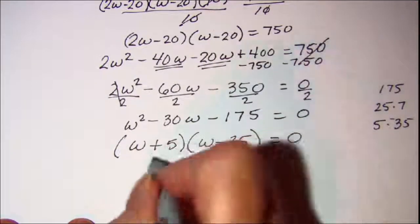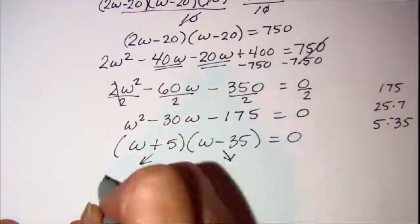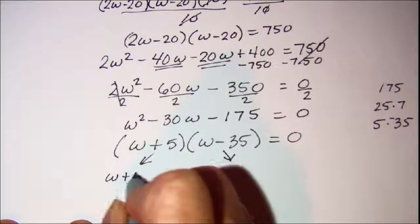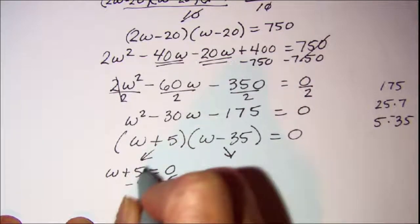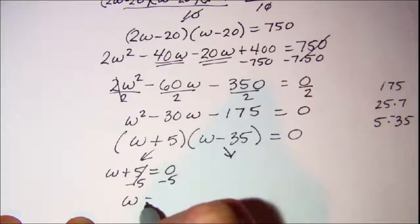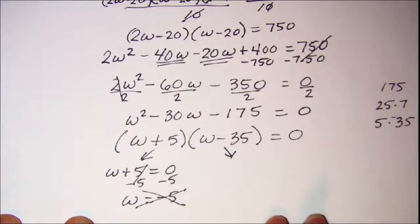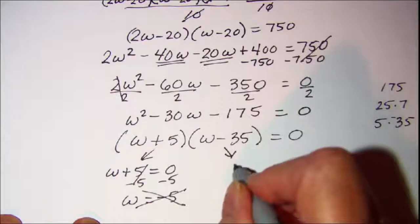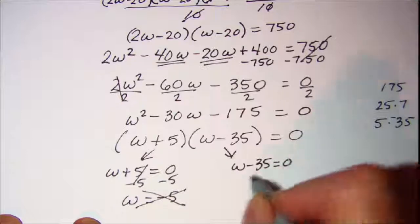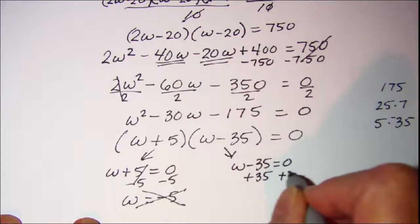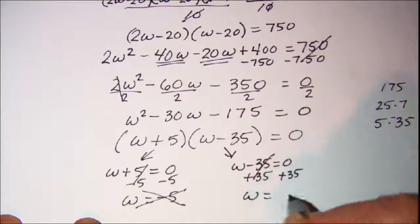The zero factor property lets me set each factor equal to zero. W plus 5 equals zero gives W equals negative 5 — I can't have a negative dimension, so I discard that solution. W minus 35 equals zero gives W equals 35.